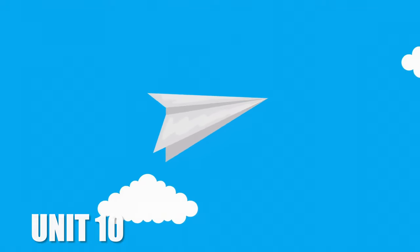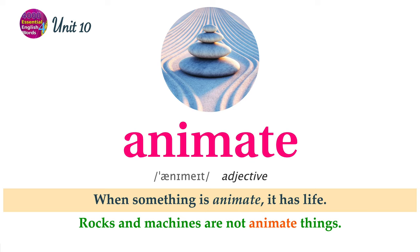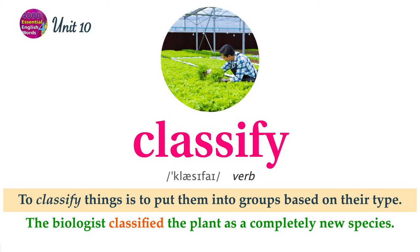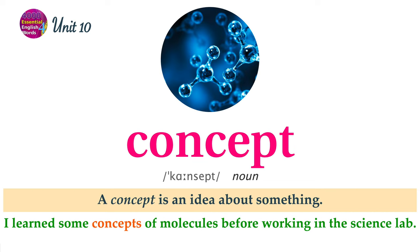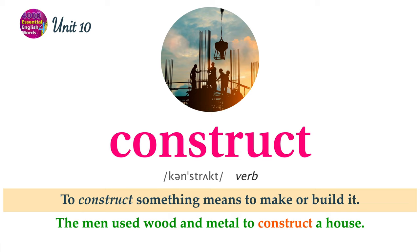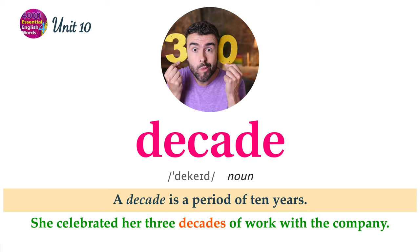Unit 10 Word List. When something is animate, it has life. Rocks and machines are not animate things. To classify things is to put them into groups based on their type. The biologist classified the plant as a completely new species. To concede is to admit that something is true against your wish. The student conceded that he had cheated on the test. A concept is an idea about something. I learned some concepts of molecules before working in the science lab. To construct something means to make or build it. The men used wood and metal to construct a house. A decade is a period of 10 years. She celebrated her three decades of work with the company.